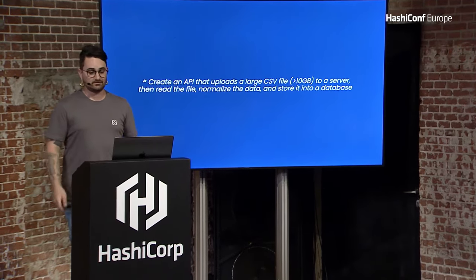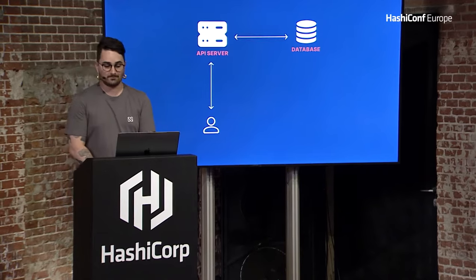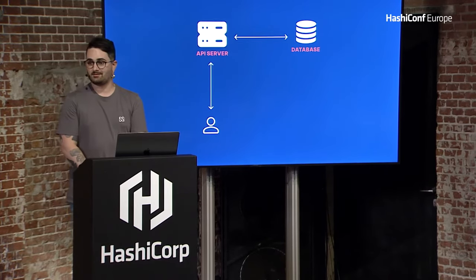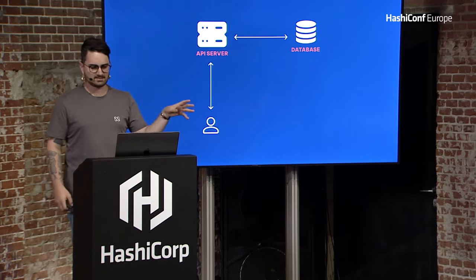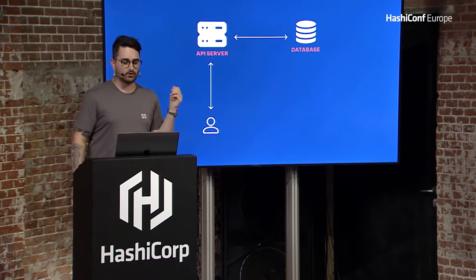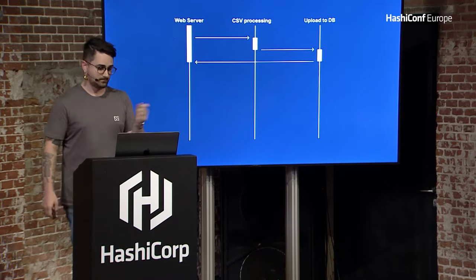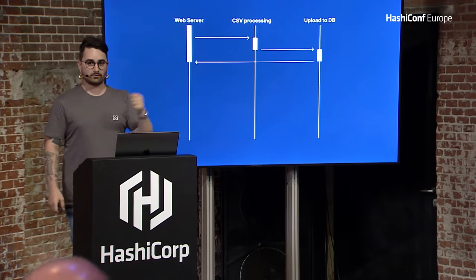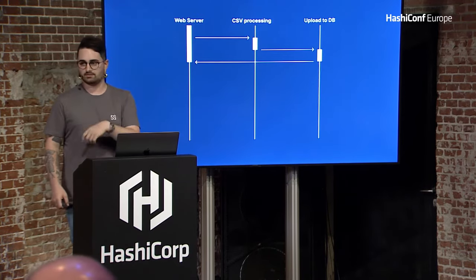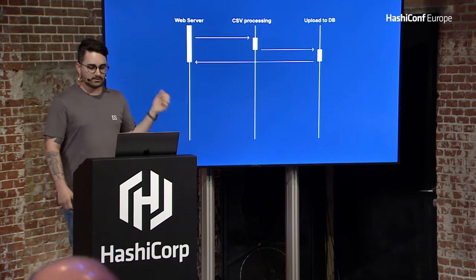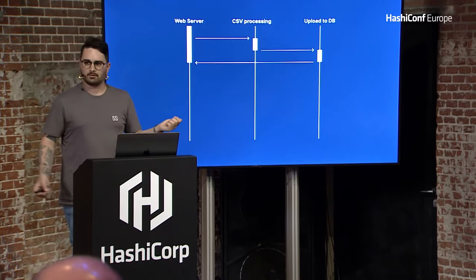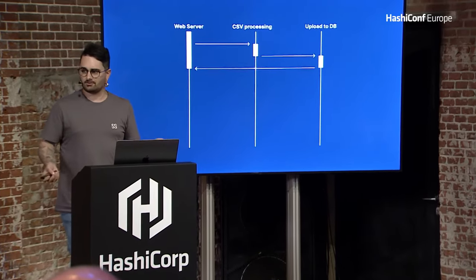The vast majority of the students came up with the following diagram. We are users, we upload something to the API server, the API server takes the CSV files, normalizes it, and uploads to the database. In that kind of diagram, we make a request, the web server processes the file, uploads the data into the database, and after that sends a reply to the final user. That could take like 30 minutes, depending on the internet connection you have.